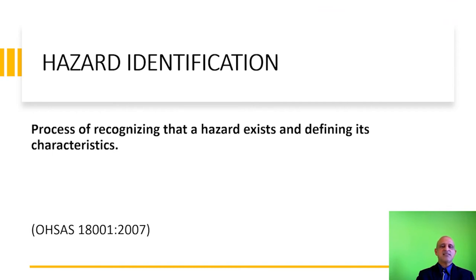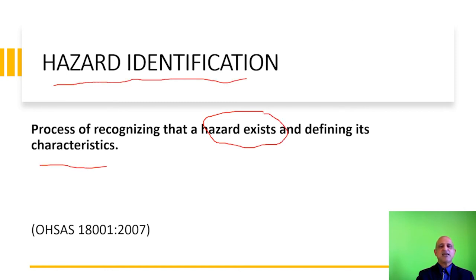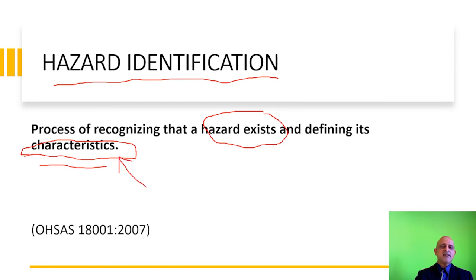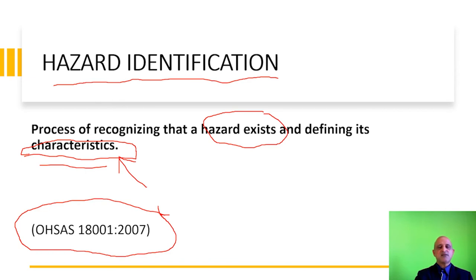The process of recognizing that a hazard exists and defining its characteristics is termed hazard identification. Hazard identification basically focuses on identifying or categorizing a biological agent into its respective risk group — this constitutes the process of defining its characteristics. In order to identify a hazard, you need a priori or prior information pertaining to that particular biological agent. This can be found in the Pathogen Safety Data Sheets — a website designed and developed by the government of Canada — which is a very useful resource for biorisk managers.